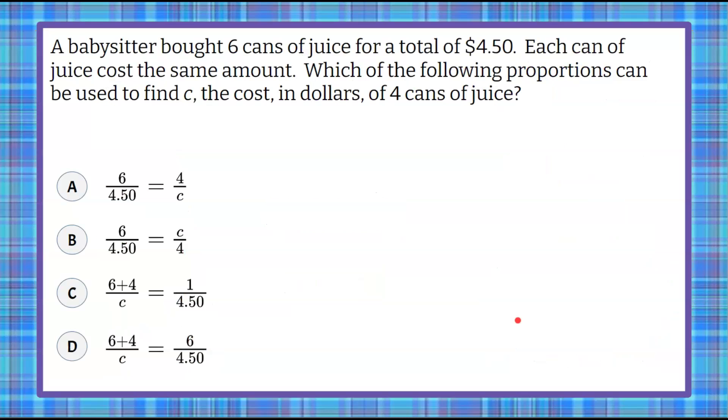Here's our question today. We have a babysitter who bought six cans of juice for a total of four dollars and fifty cents. Each can of juice costs the same amount. We're asked which of the following proportions can be used to find c, the cost in dollars of four cans of juice, and you have four answer choices to pick from.